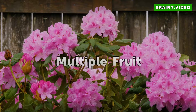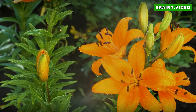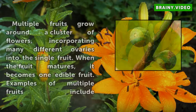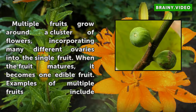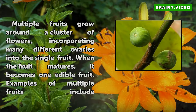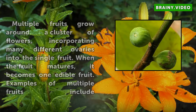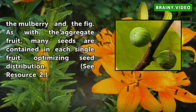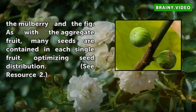Multiple fruits grow around a cluster of flowers, incorporating many different ovaries into a single fruit. When the fruit matures, it becomes one edible fruit. Examples of multiple fruits include the mulberry. As with the aggregate fruit, many seeds are contained in each single fruit, optimizing seed distribution.